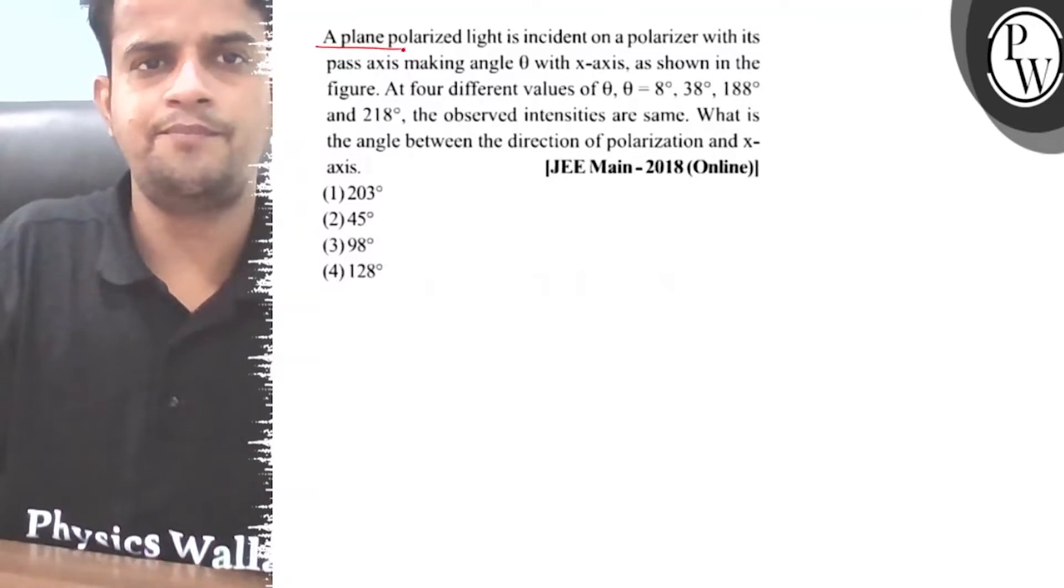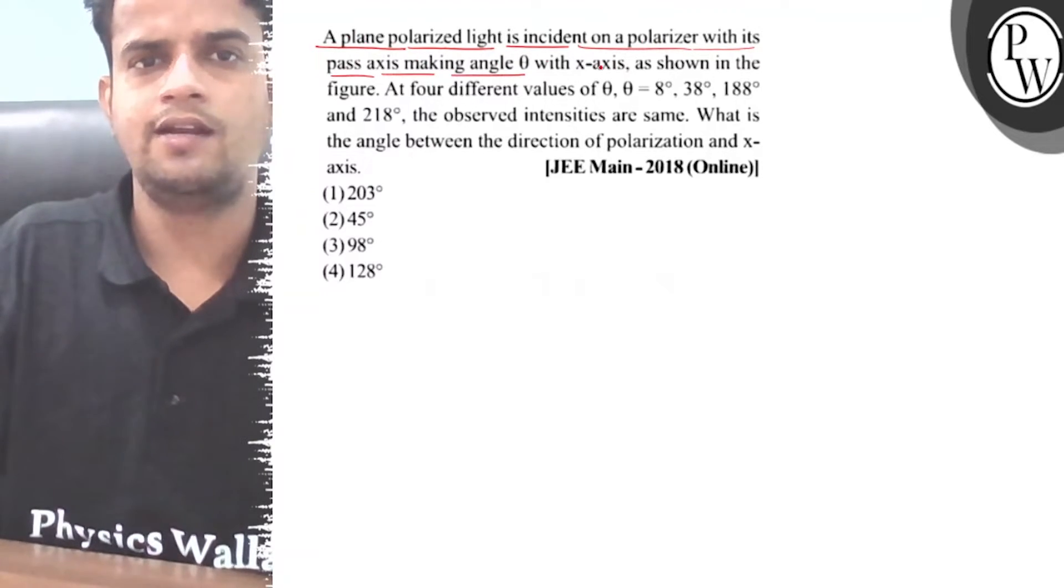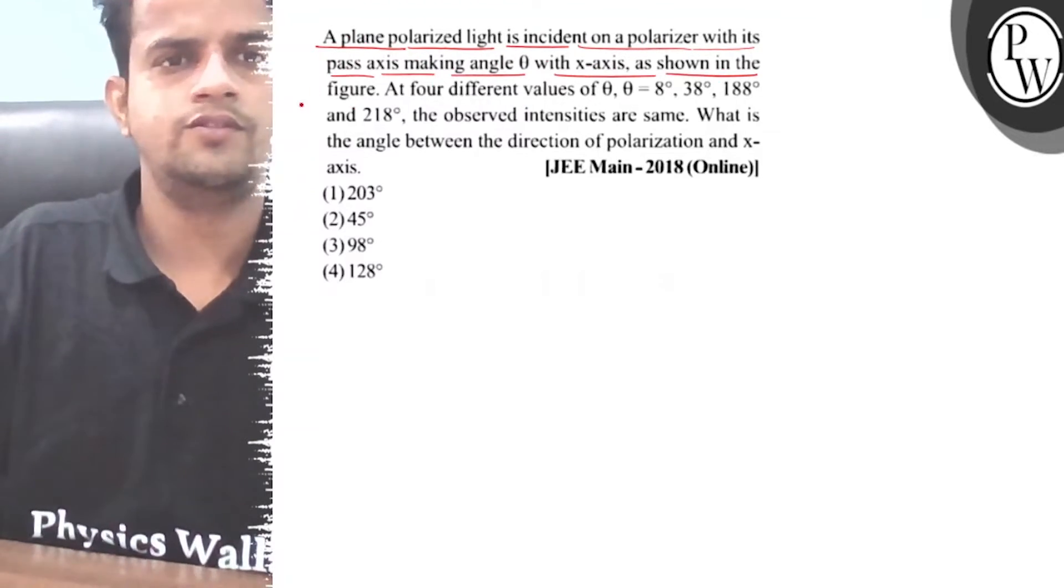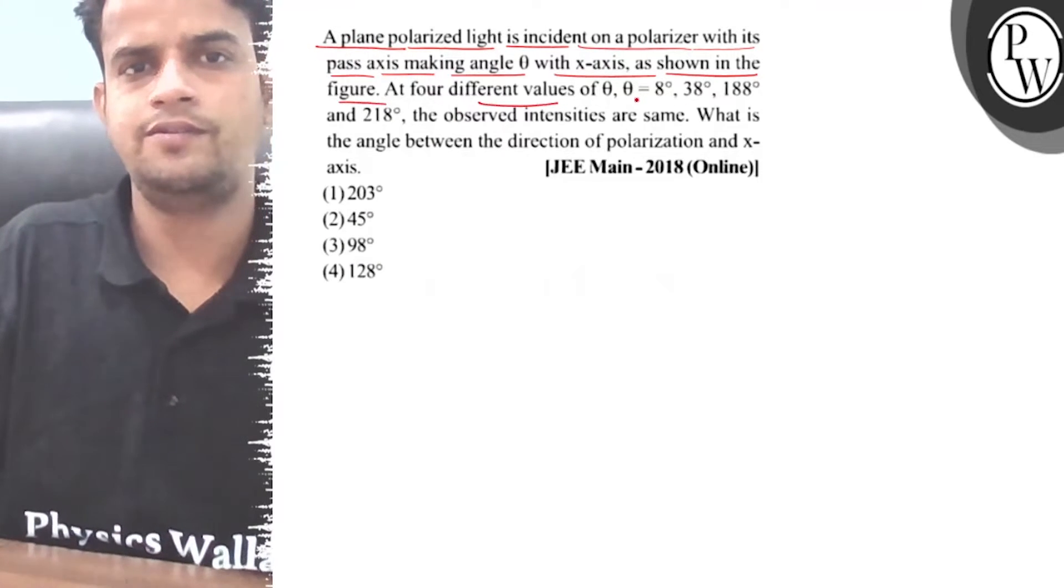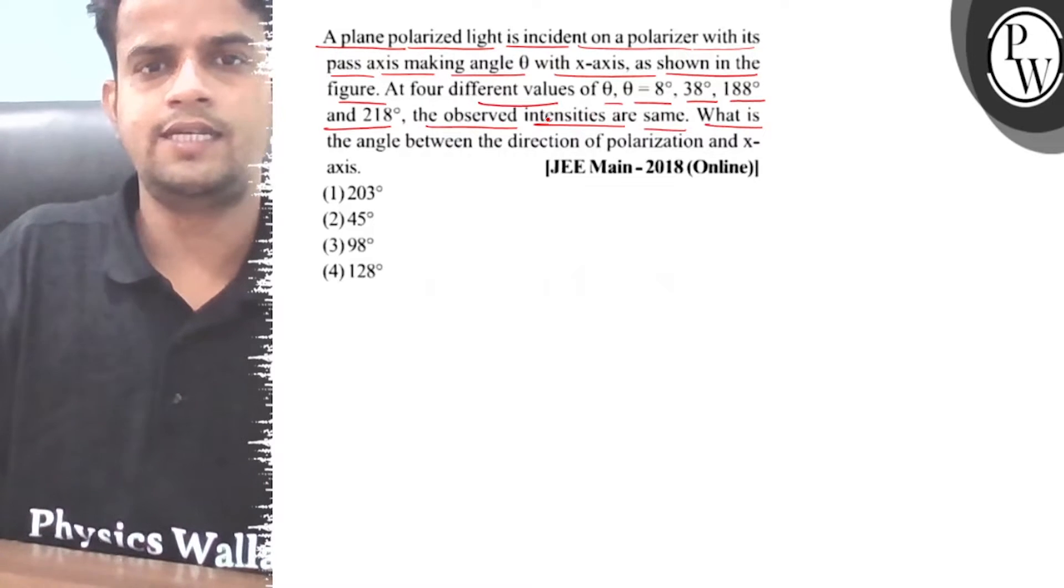Hello, let's consider this question. A plane polarized light is incident on a polarizer with the pass axis making angle theta with the x-axis as shown in the figure. At four different values of theta: 8 degrees, 38 degrees, 188 degrees, and 218 degrees, the observed intensities are the same.